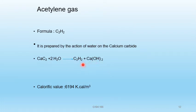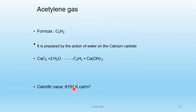Acetylene is prepared by the action of water on calcium carbide. The calorific value of acetylene is 6194 kilocalories per meter cube.